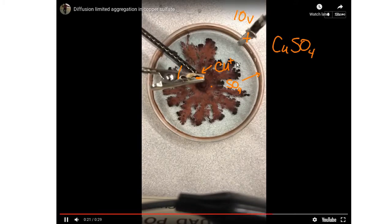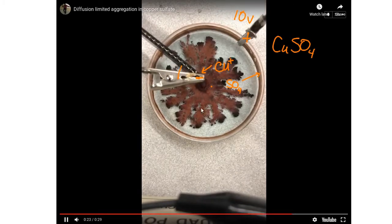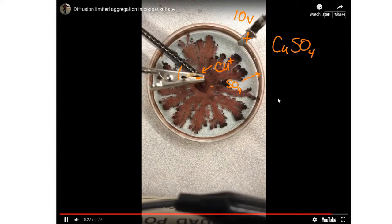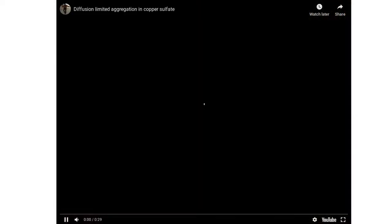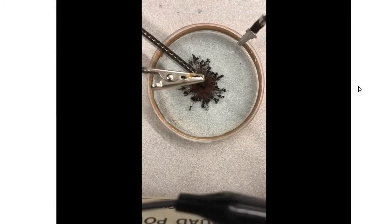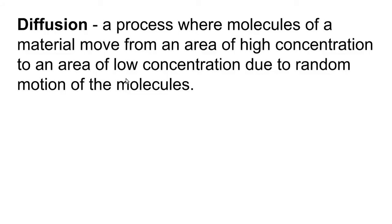So in this video, we're going to investigate a little bit about how to simulate this in a computer. This structure is limited by diffusion. Remember, diffusion is the process that happens where molecules of a material move from an area of higher concentration to an area of low concentration due to random motion of the molecules. We saw this with food coloring last week.